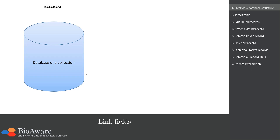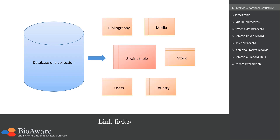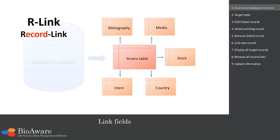Here we see the database. In the database we have a table, for example the strains table. But there can be many more tables, such as the bibliography table, the media, stock, country and the users table. The record link field, or R-link, can be used to connect the data stored in two different tables.